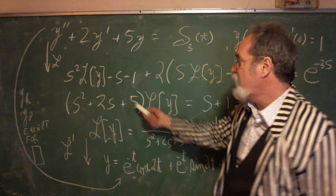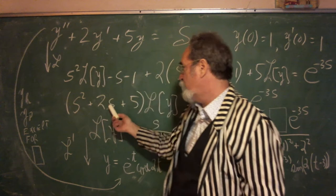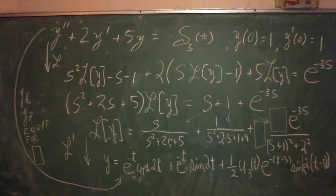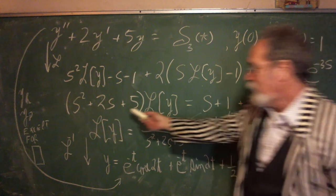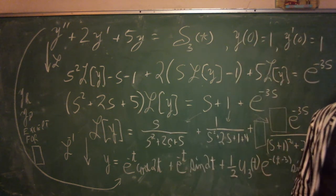So you factor out all this stuff and you see your old friend r squared plus 2r plus 5 - s squared plus 2s plus 5 - that always happens. And then you shove everything else to the other side. Now you divide by s squared plus 2s plus 5, and s squared plus 2s plus 5 is nice.